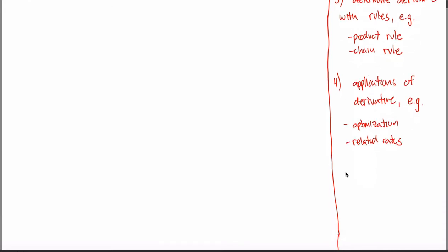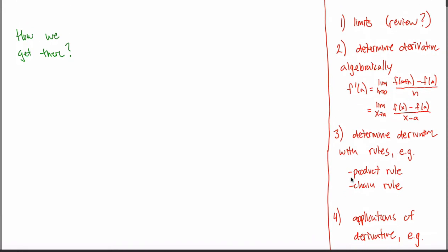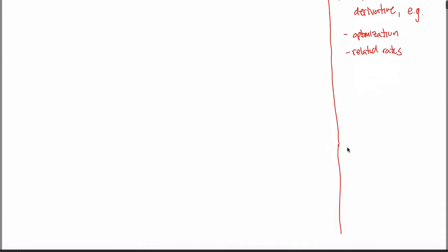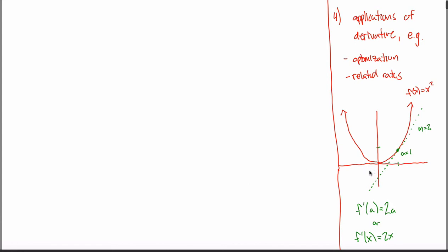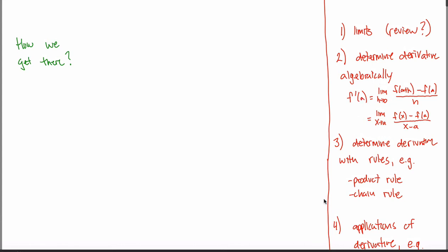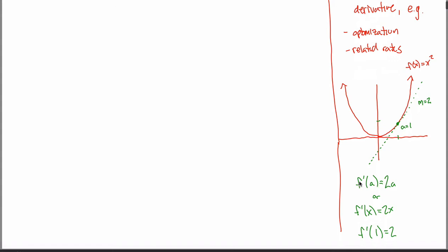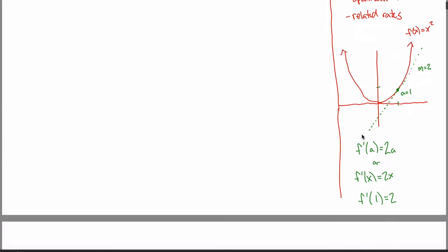Often the applications get so abstract that you forget what the derivative was in the first place. Maybe the best way to tie it back together is with a picture. In Math 251, you'd have some function — often f of x equals x squared — pick a point, and figure out the slope of the tangent line to that curve at that point. Doing it algebraically using the difference quotient or definition of the derivative, you'd get something like f prime of a equals 2a, meaning the slope of the tangent line at any value a is exactly twice that value.